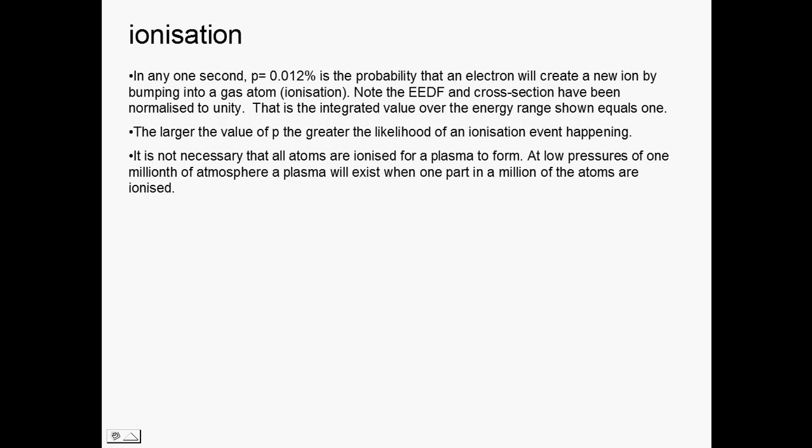So if only one millionth of that gas, only one in every million atoms is ionized, then the ion density and the electron density will be of the order of 10 to the 13 atoms per cubic meter.